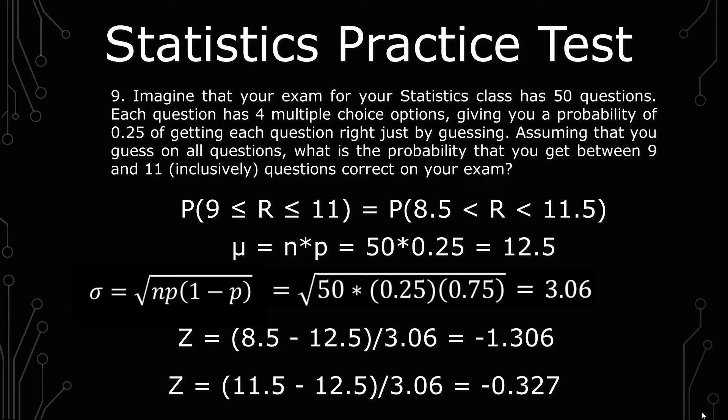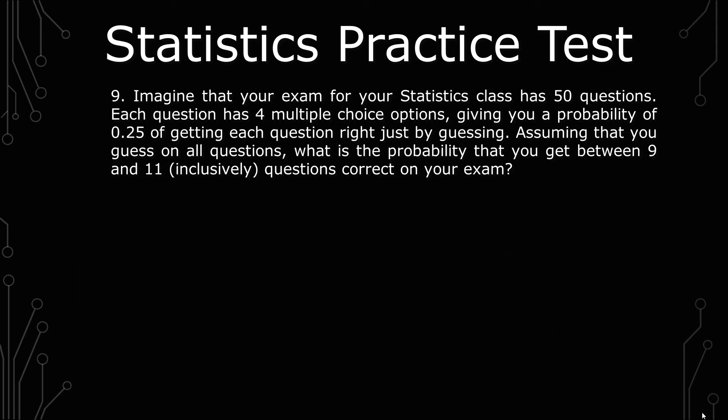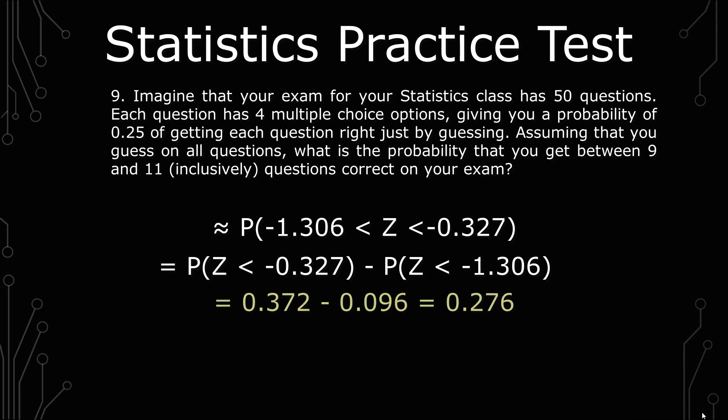And after you've got all of that, there's a lot of minor calculations that happen with this one. You have approximately the probability of negative 1.306 less than z, not R, z less than negative 0.327, which equals the probability of z is less than negative 0.327 minus the probability of z less than negative 1.306, which gives you 0.372 minus 0.096, which gives you 0.276.